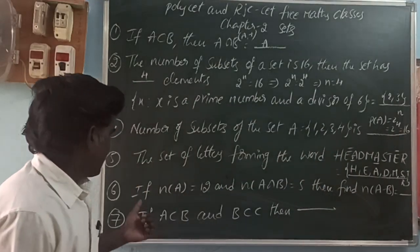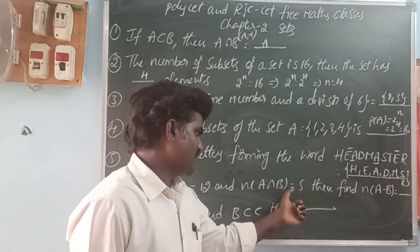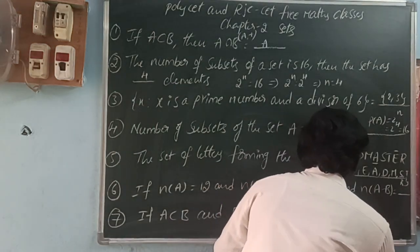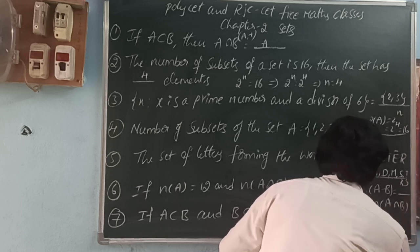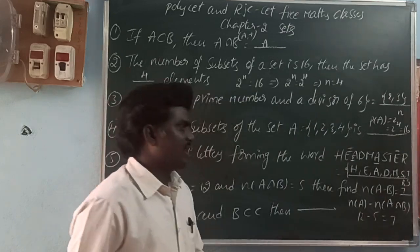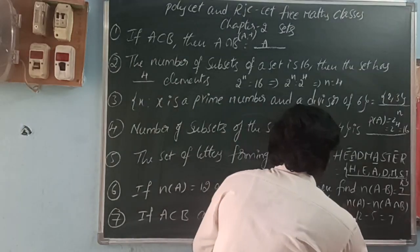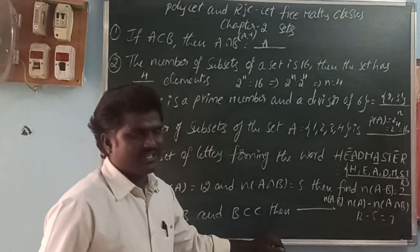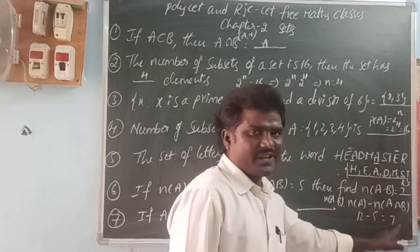Next: if N of A is equal to 12 and N of A intersection B is equal to 5, then find N of A minus B. The formula is N of A minus B equals N of A minus N of A intersection B. So, N of A minus B equals 12 minus 5, which is equal to 7.